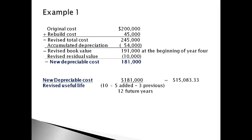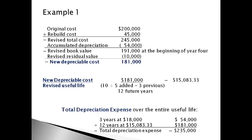Annual depreciation expense is recomputed and the company will expense $15,083 each year for the next 12 years. The total expense spread over the total of 15 years the machine is used will be the net depreciable cost of $235,000, computed as the $200,000 original cost plus $45,000 added cost less the $10,000 expected residual value.